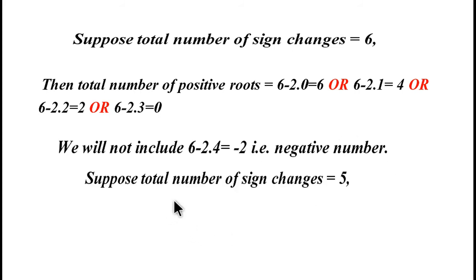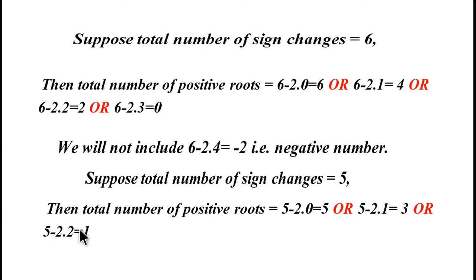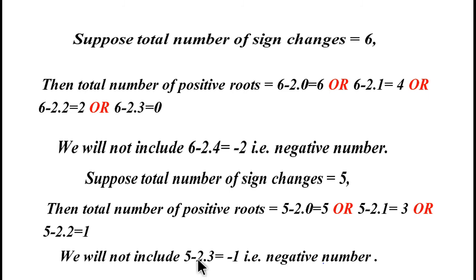Now suppose the total number of sign changes is equal to five. Then the total number of positive roots could be 5 - 2×0 = 5, or 5 - 2×1 = 3, or 5 - 2×2 = 1. So there are many possibilities. We will not include the case 5 - 2×3 because that gives a negative number.